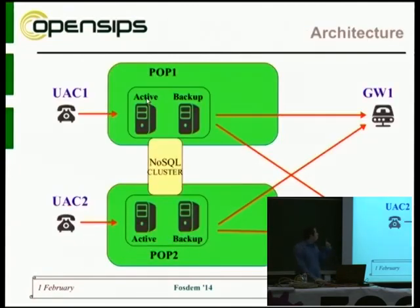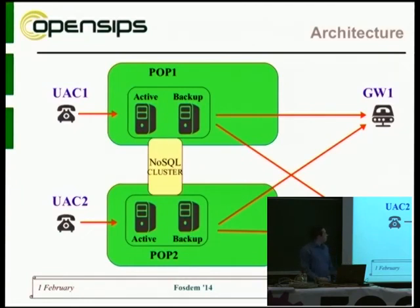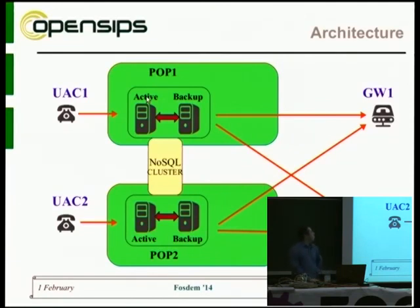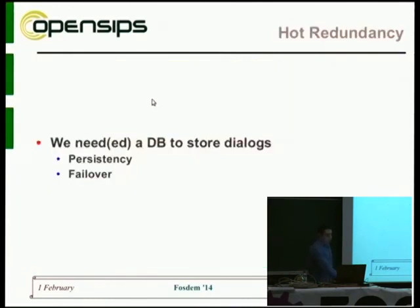We now reached an architecture where you can have multiple points of presence, multiple OpenSIPS instances running, and the communication and sharing of call states, credit states, and other data is done via a NoSQL cluster linking all our POPs. Still, things were not perfect — we encountered issues within the same POP when it comes to achieving hot redundancy, because failure does happen.